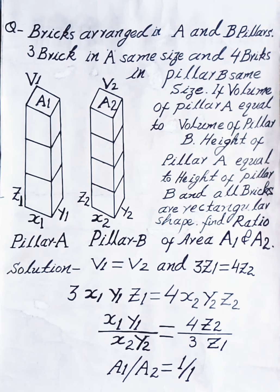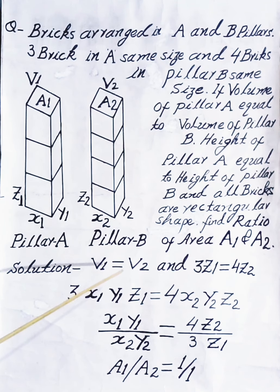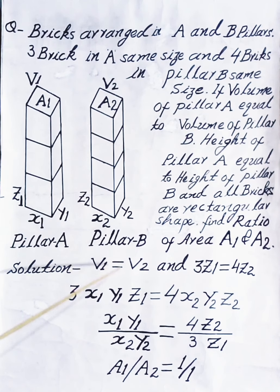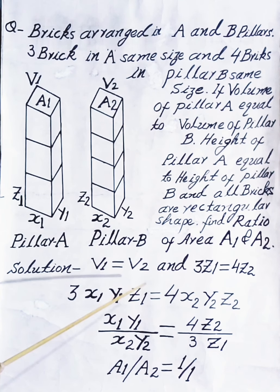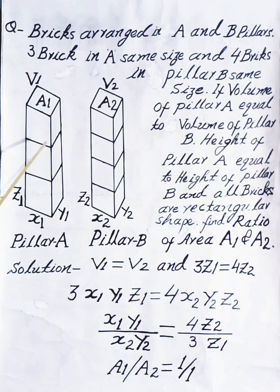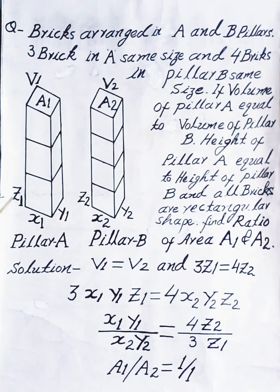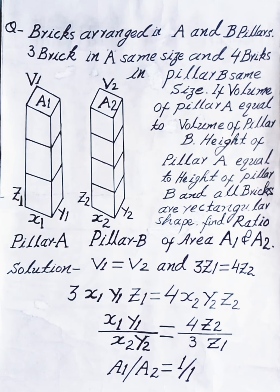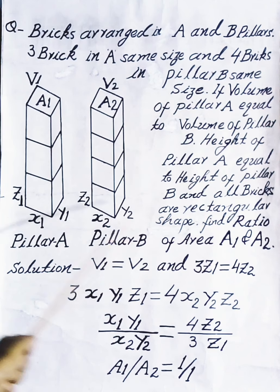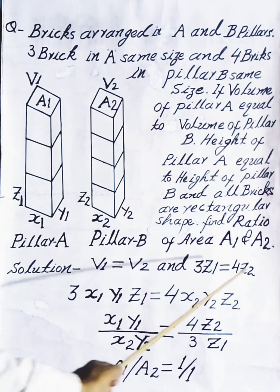Solution: Volume of pillar A, V1, equals volume of pillar B, V2. Height of pillar A equals height of pillar B. Therefore, 3·z1 equals 4·z2.